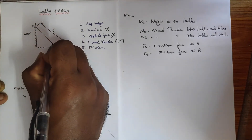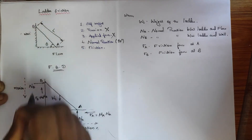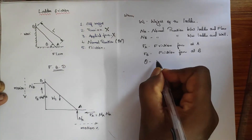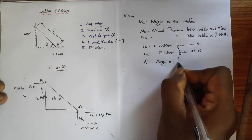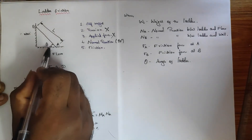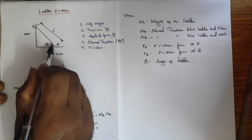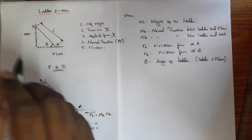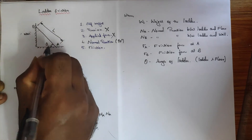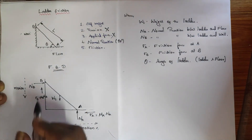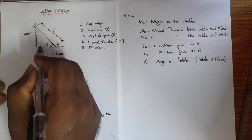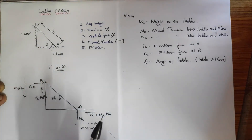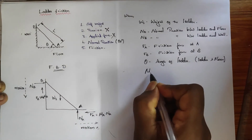The ladder makes an angle with respect to the floor, denoted as theta — this is the angle of the ladder between the ladder and the floor. Always we represent the angle of the ladder between the ladder and the floor. If the theta value is given elsewhere, we convert it using the total angle of the triangle.